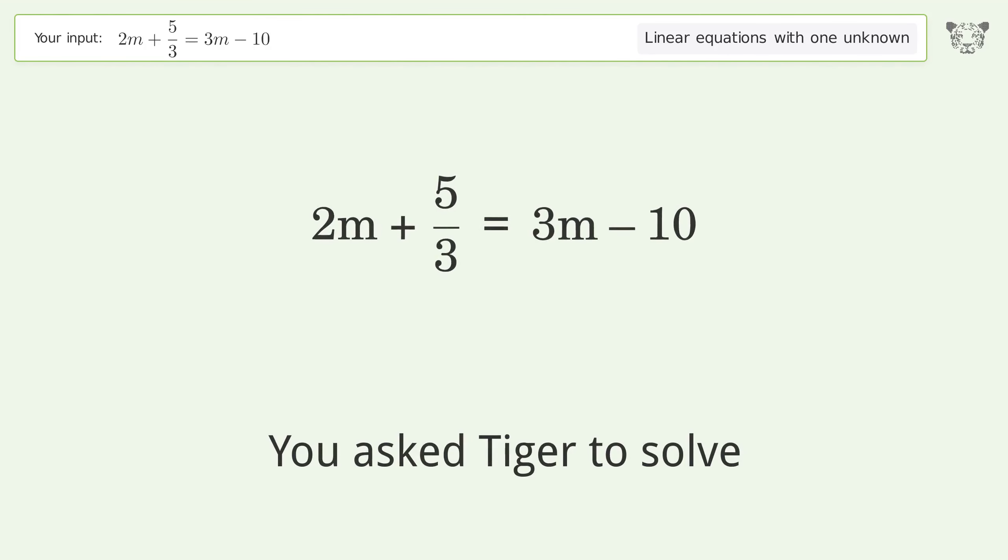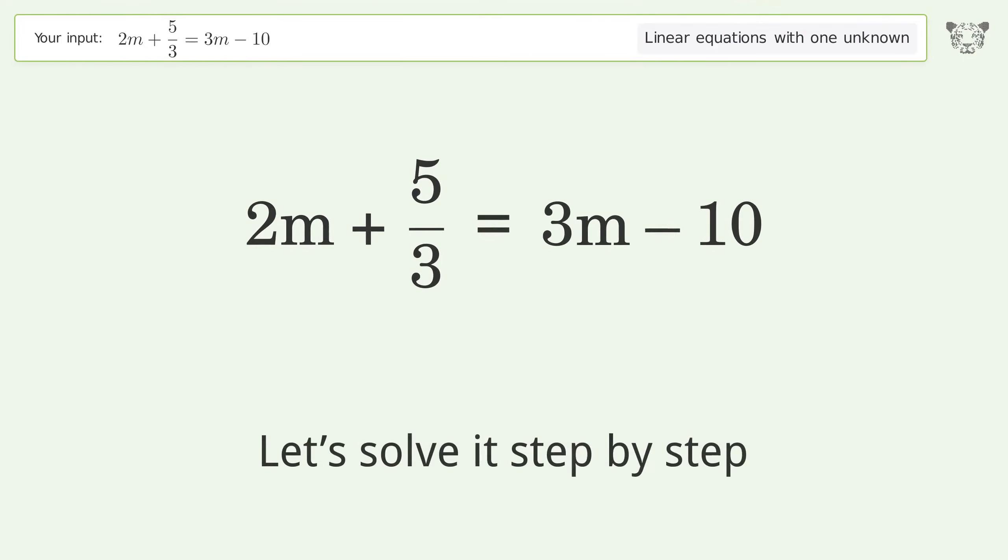You asked Tiger to solve. This deals with linear equations with one unknown. The final result is m equals 35 over 3. Let's solve it step by step.